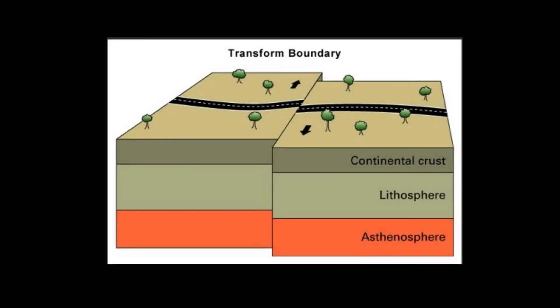When two plates push against each other, sometimes they slip sideways. The slip normally happens very quickly, and this is what causes earthquakes. This is called transform boundaries.